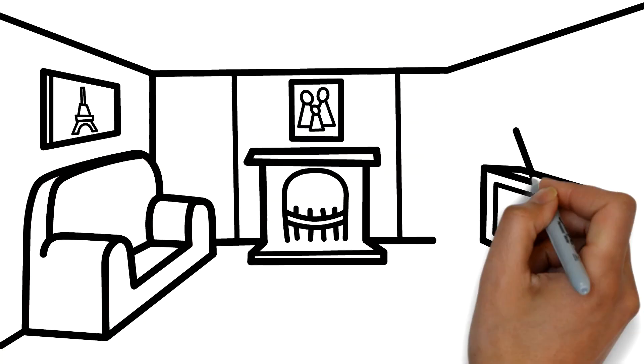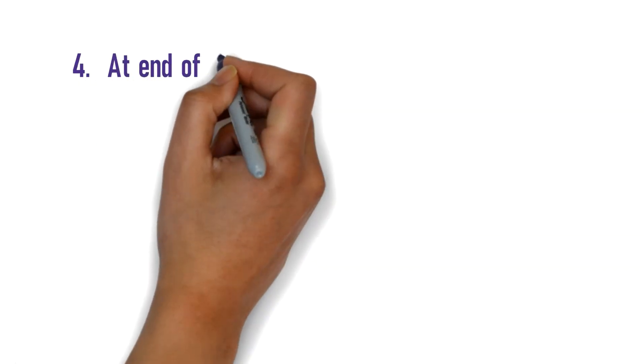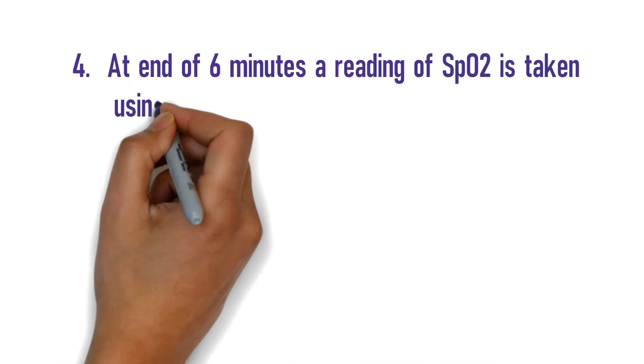Third, the individual must walk in the confinement of a room for 6 minutes non-stop without any oxygen support. Fourth, at the end of 6 minutes, a repeat reading of oxygen saturation is taken using the oximeter.